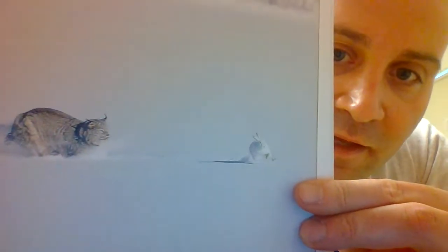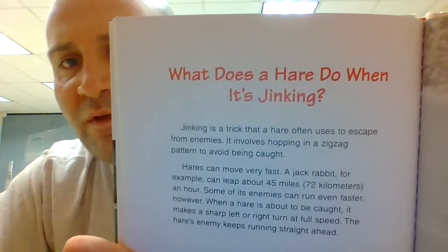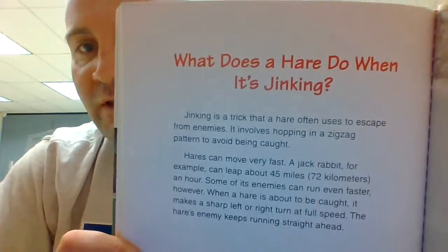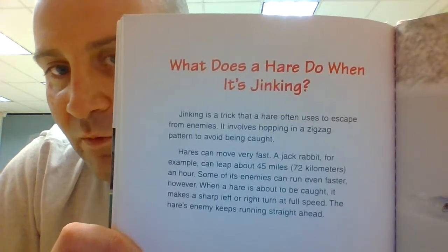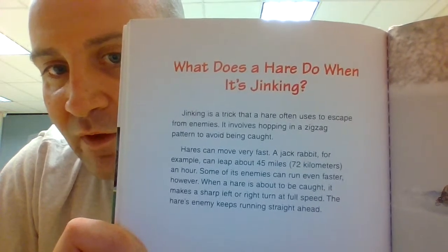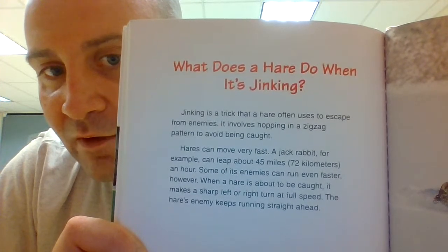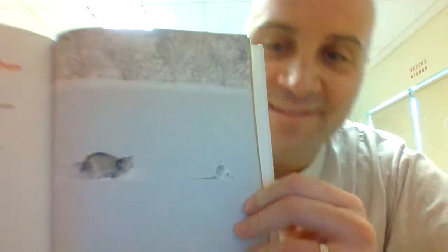Last one — I can read about rabbits all day. There's a lynx getting awfully close. Hare jinking. What does a hare do when it's jinking? Jinking is a trick that hares often use to escape from enemies — it involves hopping in a zigzag pattern to avoid being caught. Hares can move very fast; a jackrabbit, for example, can leap about 45 miles an hour. Some of its enemies can run even faster. However, when a hare is about to get caught, it makes a sharp left or right turn at full speed, and the hare's enemies keep running straight ahead. Fantastic. Hope you enjoyed the story — I'm looking for a lot of facts that you learned about the cottontail. I'll see you soon, boys and girls.